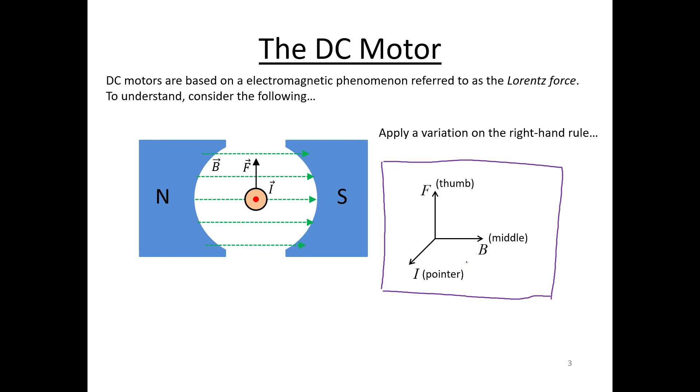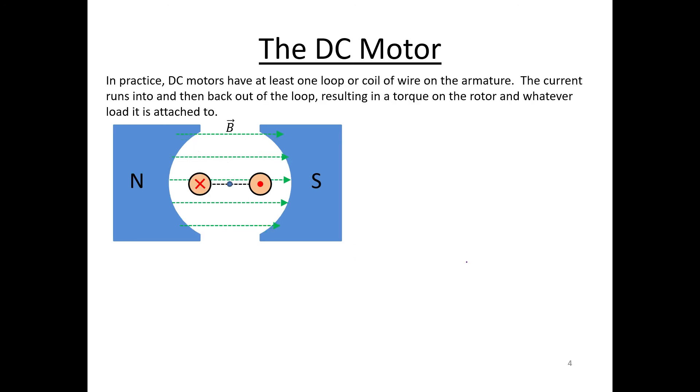We want rotational motion from our DC motor. We want to put in DC electricity and get out rotational motion, mechanical motion. Instead of having a single length of wire, what you do is you put a loop of current carrying wire in there.